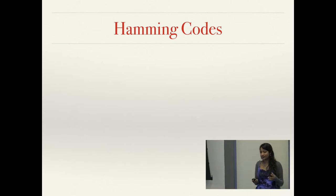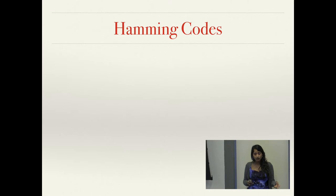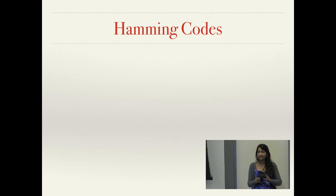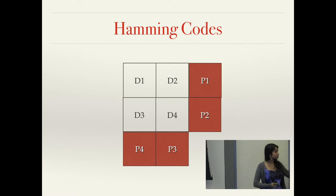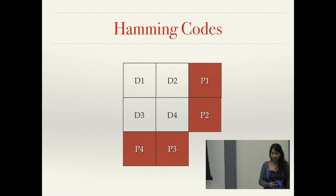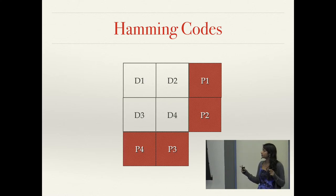Channel coding refers to error correcting codes — methods of encoding data that enable you to detect and correct for errors while not adding too much overhead. A classic example is a Hamming code — specifically an extended Hamming code that adds four parity bits as overhead to four data bits. The parity bits are arrayed in a way that allows you to detect up to two bit errors and correct a single one.